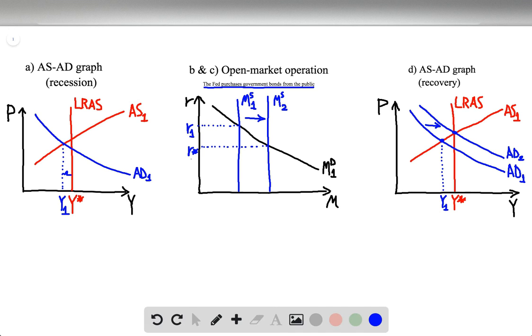And this new curve intersects with the aggregate supply curve on the long-run aggregate supply curve. So, this point here means that the economy is back to its natural level of output, Y*.